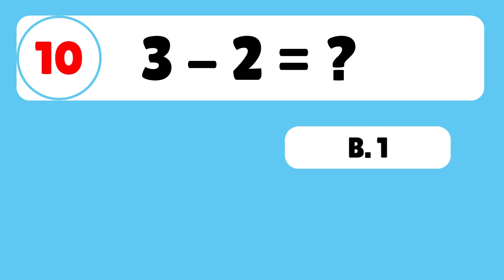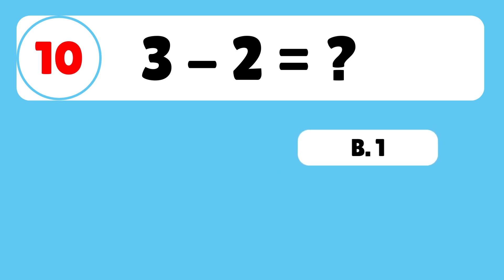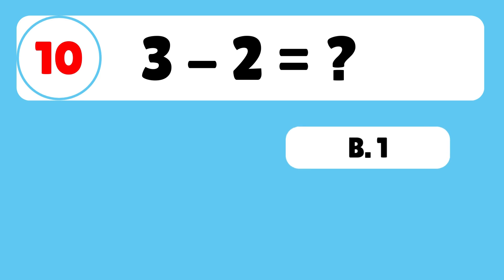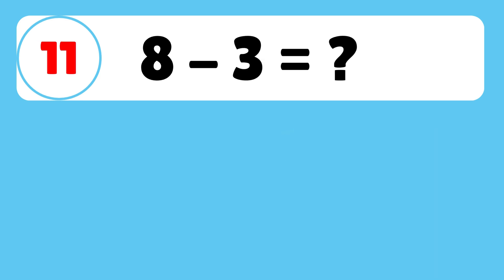Question 10: What is 3 minus 2? The answer is B. 3 minus 2 is equal to 1. Well done!